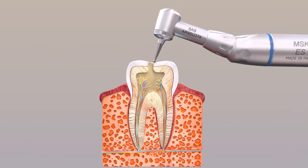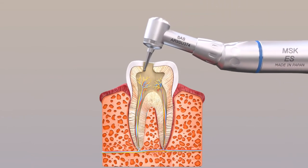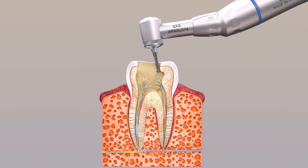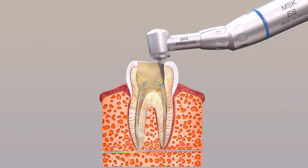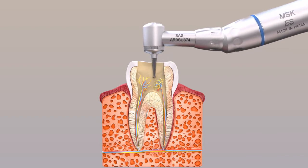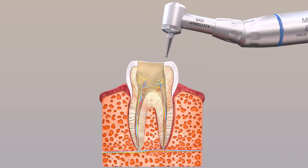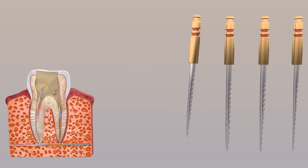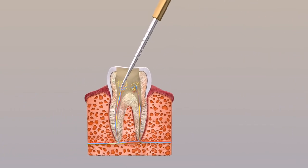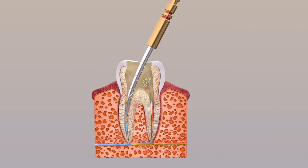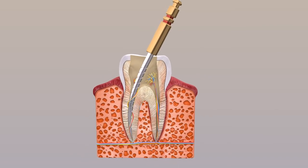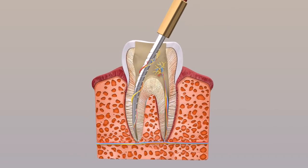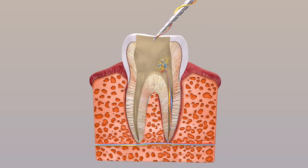Now it's time for pulpectomy. An opening is made with the help of a handpiece through the crown of the tooth to the pulp chamber. Endodontic files are used to clean the infected tissue and unhealthy pulp out of the canals.